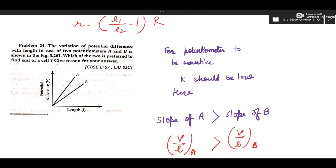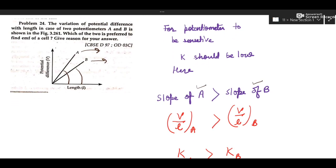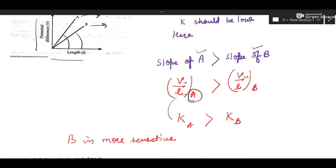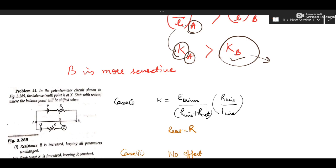The next is a conceptual question: which potentiometer will be preferred — A or B? The slope of graph A is greater than slope of B, meaning V/L of A > V/L of B, so potential gradient of A is greater than that of B. Since sensitivity is higher when potential gradient is lower, potentiometer B is preferred because it is more sensitive.